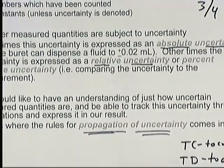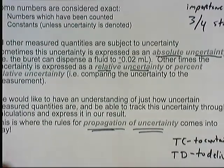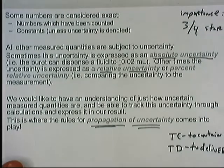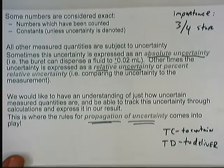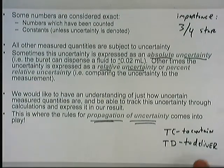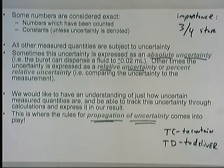Anything that delivers a volume is going to have a TD marking; anything meant to contain—like a volumetric flask or a graduated cylinder—will have TC. Don't lose sight of those markings on the side of your volumetric ware. Also, if you change the temperature the volumes can change, and you should never heat those devices too hot—you can actually warp the glass and destroy it.